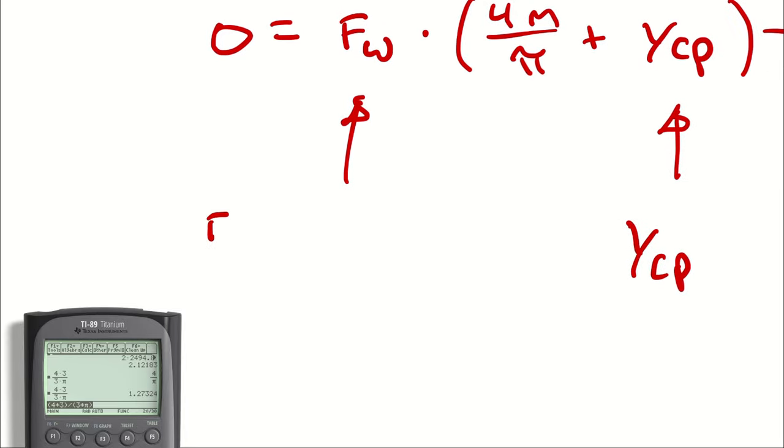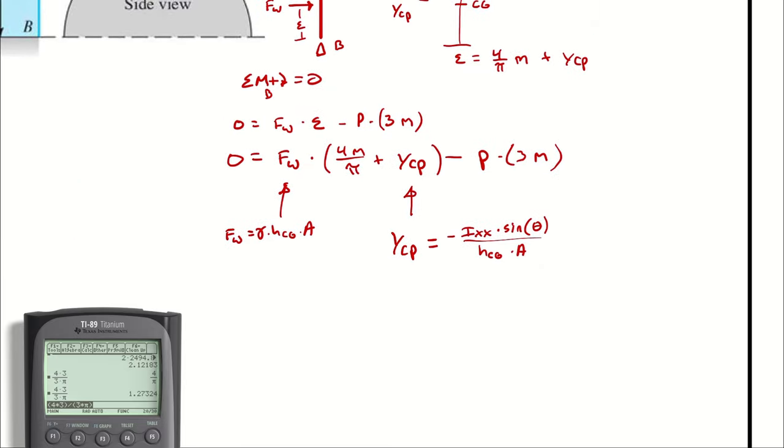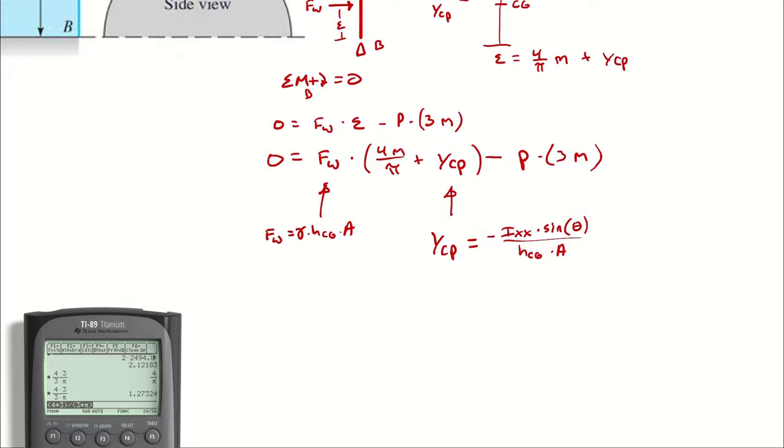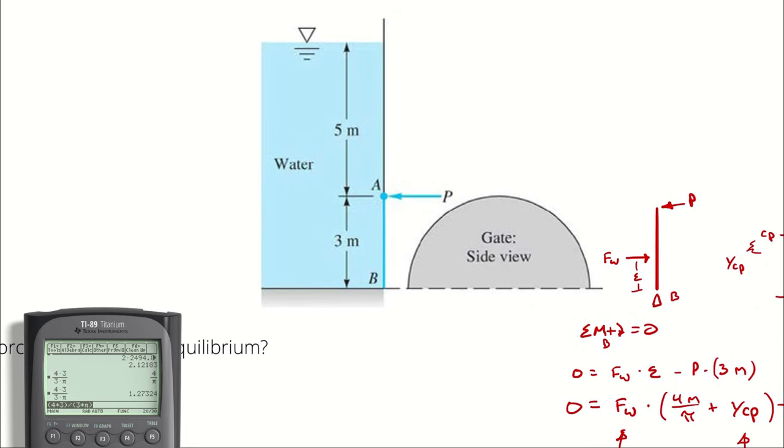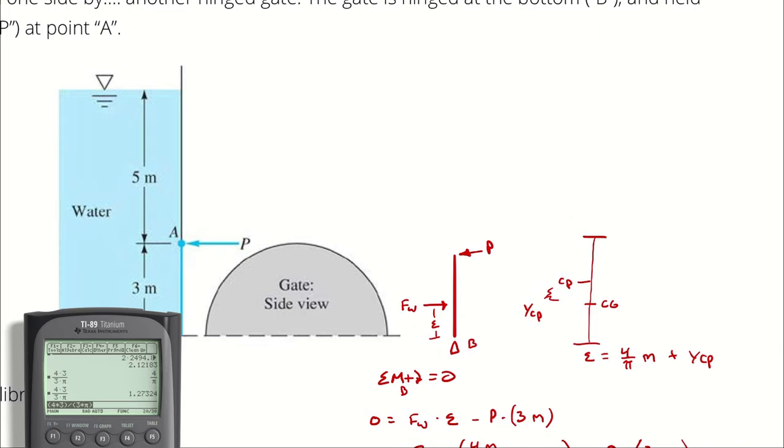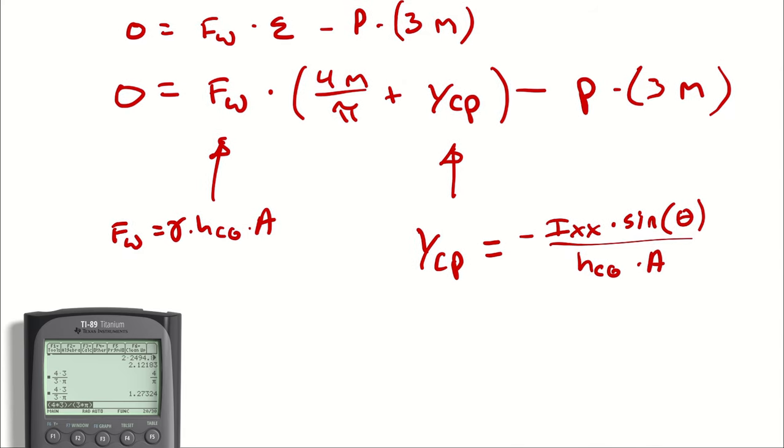So, YCP then would be negative IXX times sine times theta divided by HCG times area. So, FW is equal to gamma times HCG times area and YCP is negative IXX times sine 90 degrees divided by HCG times area. And the big bear of a problem in the previous example was the fact that HCG was written in terms of H. This time around though, we know the height of the water. The height of the water is given its 8 meters. Therefore, HCG is 8 meters minus 4 over pi meters or 8 meters minus 1.27324 meters. So, I know all of those quantities.